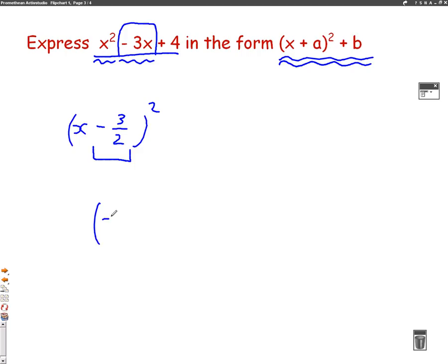When you square it, well, if I square minus 3 over 2, so minus 3 over 2 times minus 3 over 2, well, 2 minuses times together will become a plus. And that will be plus 9 over 4, because you times the tops of the fraction times the bottom of the fraction.